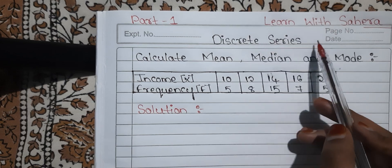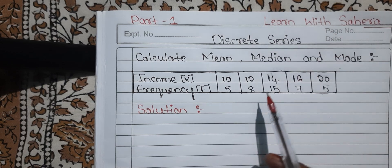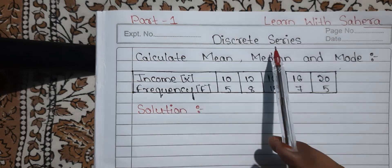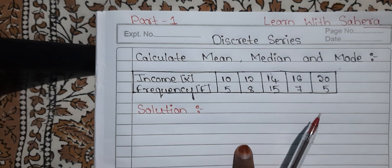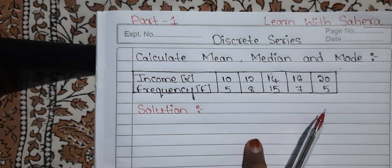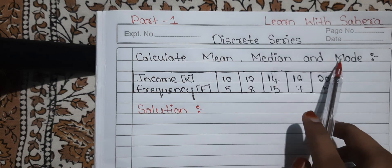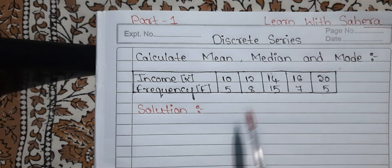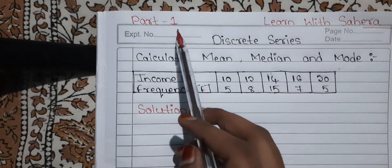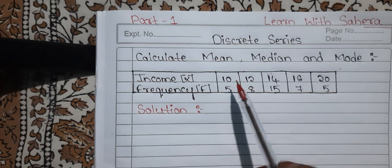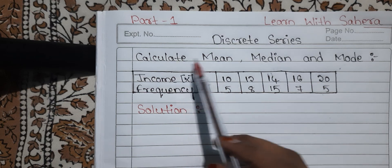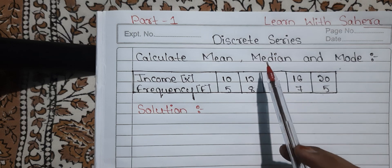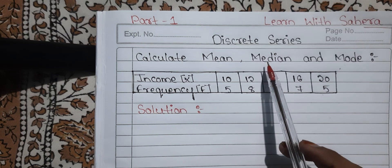Discrete series is also known as ungrouped data. I am going to upload two videos, part 1 and part 2. The video you are watching now is part 1, covering mean, median and mode in discrete series. In part 2, we are going to see the calculation of mean, median and mode in continuous series, which is also known as grouped data.